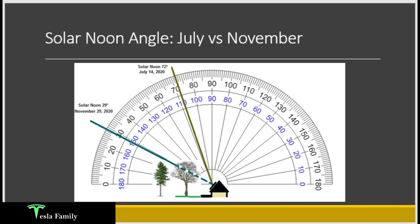I wanted to visualize these differences in solar elevation above the horizon between July and November. I've got a protractor overlaid here. You can see in the gold line that's 72 degrees above the horizon — that's solar noon on July 14th, 2020. Comparing that to November 29th, 2020, that more teal color line is much lower above the horizon, only 29 degrees at solar noon. And if you have tall trees in front of your home, you'll definitely see shading, which will prevent part of the solar energy from reaching your panels.